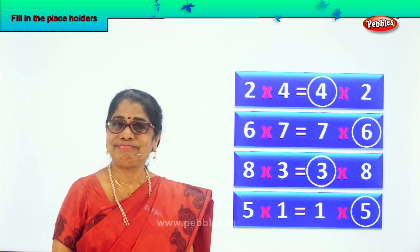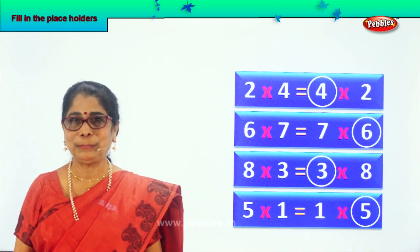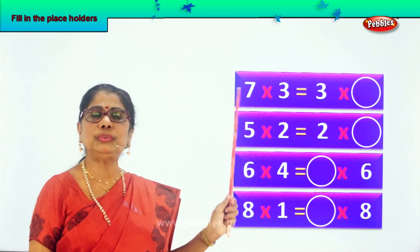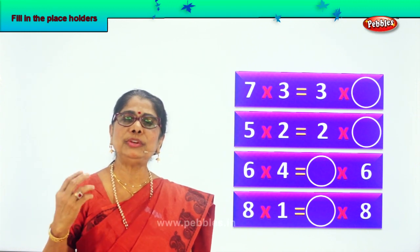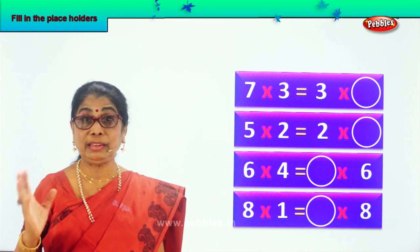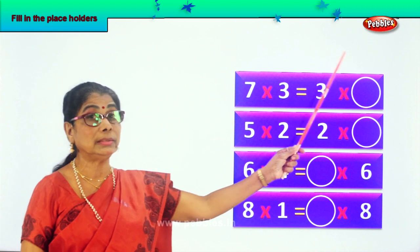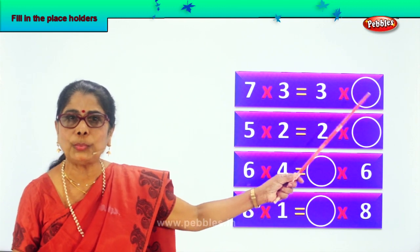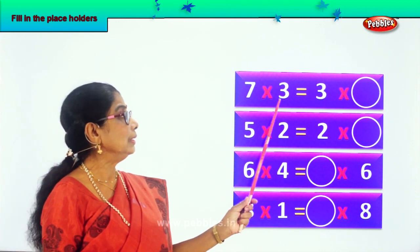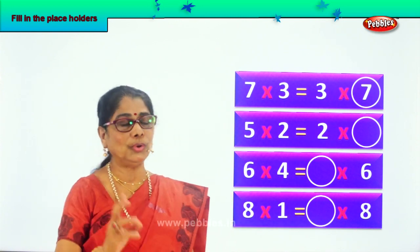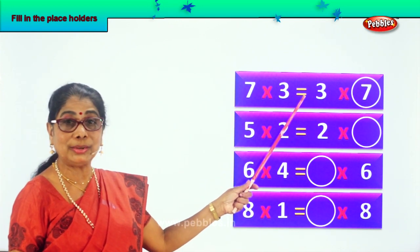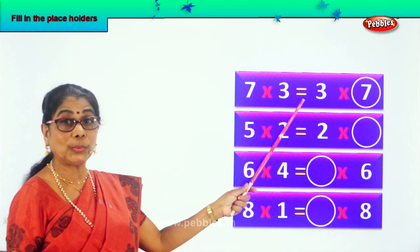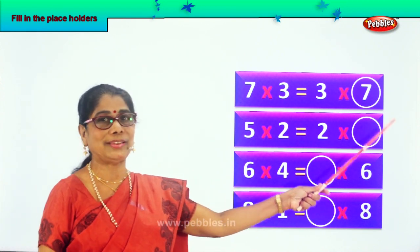What will give you 21? Definitely 3 into 7 only can give you 21. Now look. 7 into 3 is equal to 3 into 7 — we have only reversed the numbers. 7 into 3 is equal to 3 into 7.